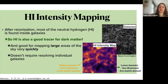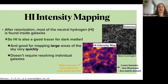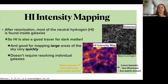HI intensity mapping is a complementary way of observing the large scale structure, because after reionization most of the neutral hydrogen — HI — in the universe can be found inside self-shielding galaxies, which means HI is also a good tracer for dark matter in the same way galaxies are. It's good for mapping large areas of the sky quickly because you're not trying to resolve each individual galaxy. You're basically just pointing your telescope at the sky and saying how much HI intensity is coming from this area — a lot of HI means a lot of matter, and less HI means less matter.